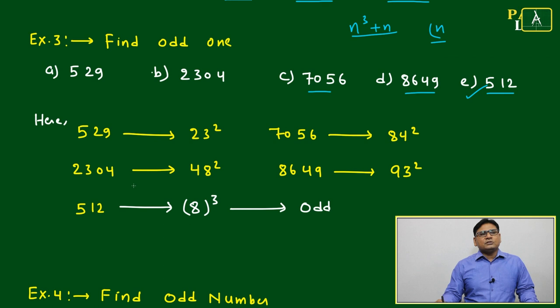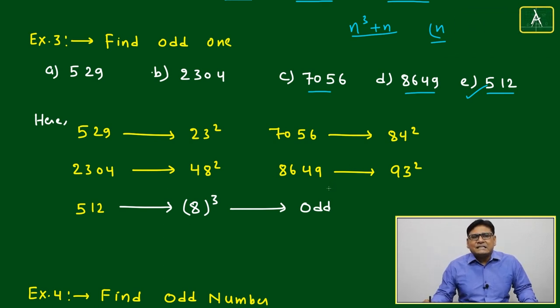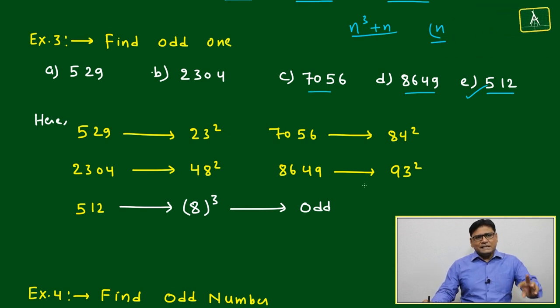529 is 23 square, 2304 is 48 square, 7056 is 84 square, 8649 is 93 square. Just by seeing itself you will see all are perfect square numbers. If you are good in number system, otherwise again you have to recheck.